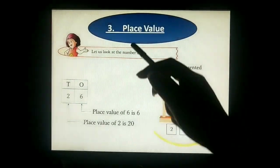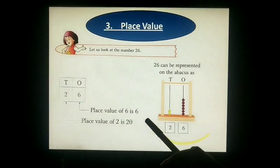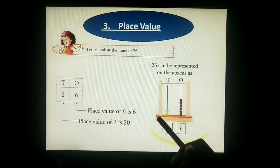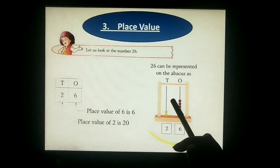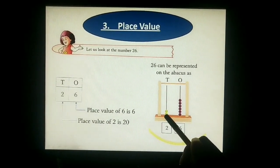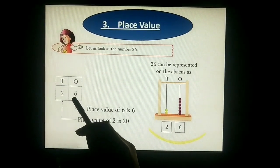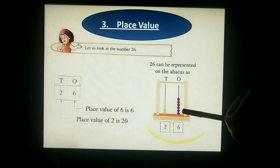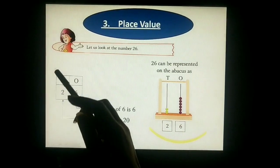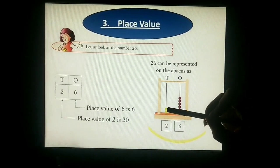So next topic is place value. Let us look at the number 26. Now 26 is given. First of all, we represent it in abacus form. In abacus form, there are two strips: the first strip is denoted by the ones place, the second strip is denoted by the tens place. Ones place — what number? 6. How many beads? 6: 1, 2, 3, 4, 5, 6. Tens place — how many? 2. So 1 and 2 beads.